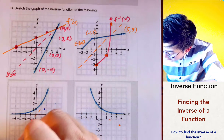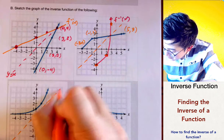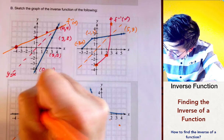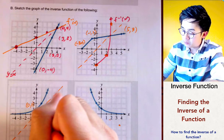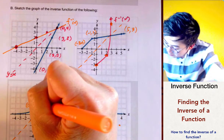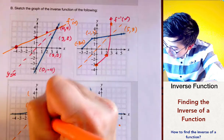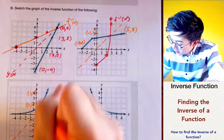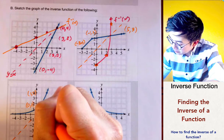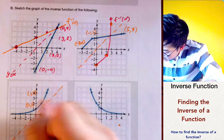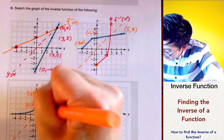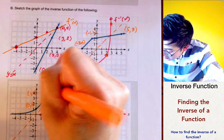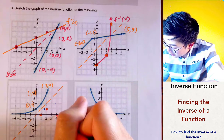For the third function, we draw our line of reflection. The first point is at (0, 1), so its reflection is (1, 0). The next point is at (1, 2), so the reflected point is at (2, 1). Then the point at (2, 4) reflects to (4, 2).